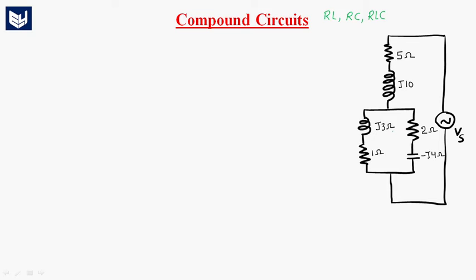So here what I am going to do is I am going to consider this 5 ohms and J10 ohms RL network as Z1.